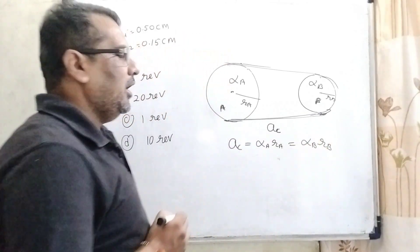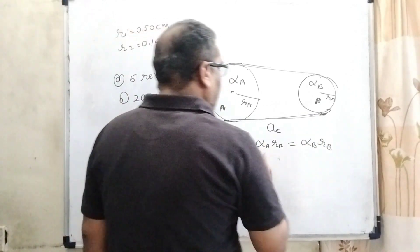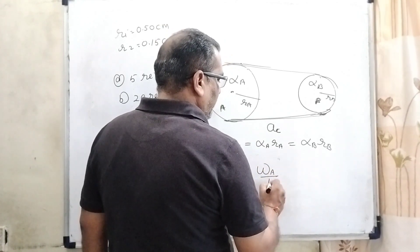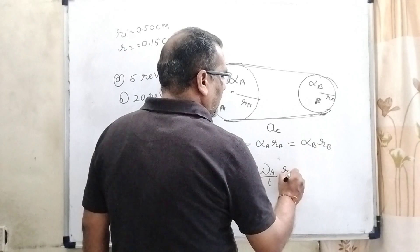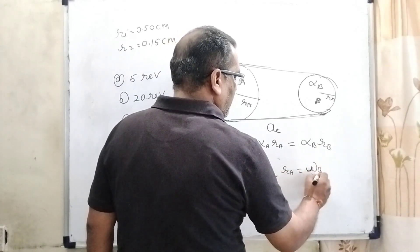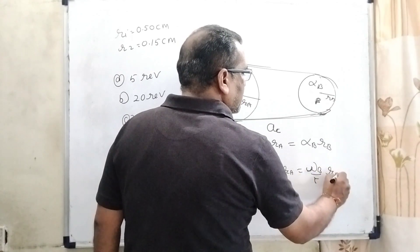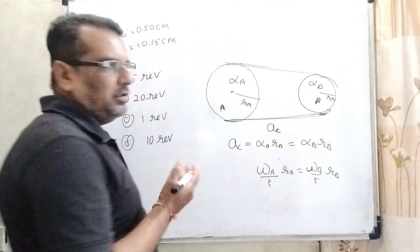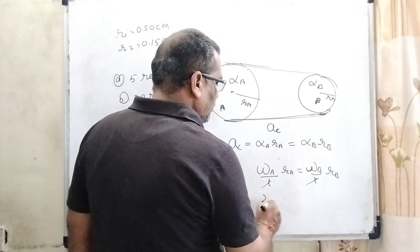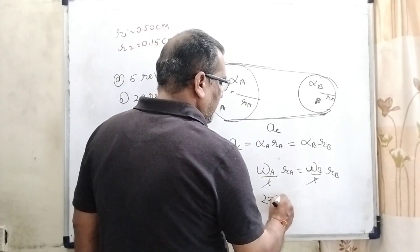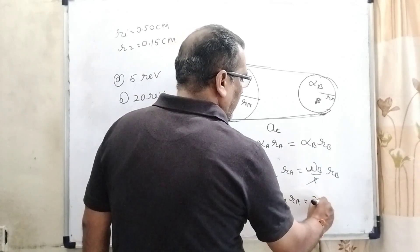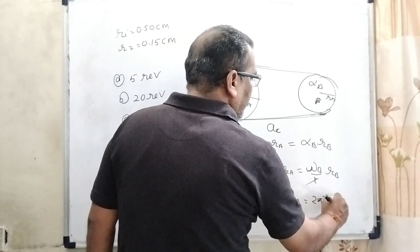Alpha angular acceleration can be written as omega A upon T times RA, omega B upon T times RB. Because they are connected together, therefore same time, so time cancels out. Omega can be written as 2 pi frequency, nu A times RA equal to 2 pi nu B times RB.